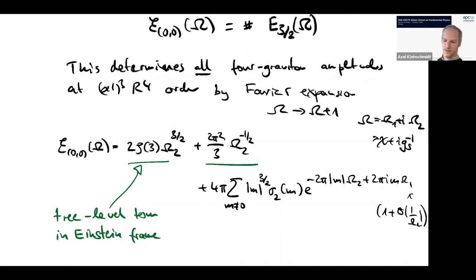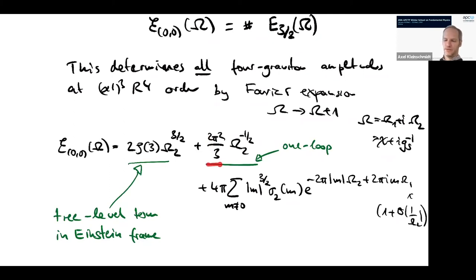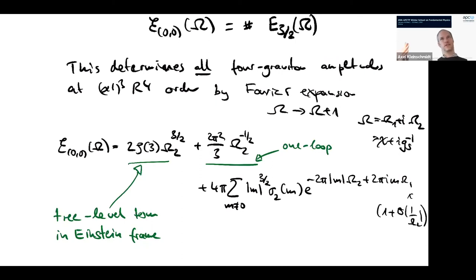If you look back at the notes from yesterday, this coefficient pi^2/3 is exactly what we had for the one-loop string scattering amplitude computed explicitly. Here we get it for free from the uniqueness of the function. We immediately deduce from U-duality that there should be a one-loop term with this coefficient — and we can go back and do the one-loop computation to confirm consistency. Moreover, there are no other terms that are pure powers of G_s, which predicts there are no higher loop contributions to R^4.